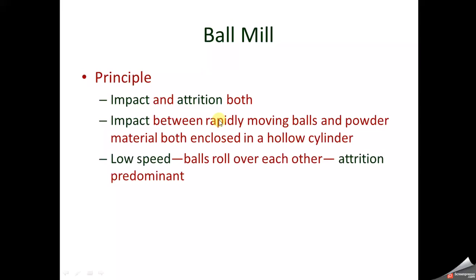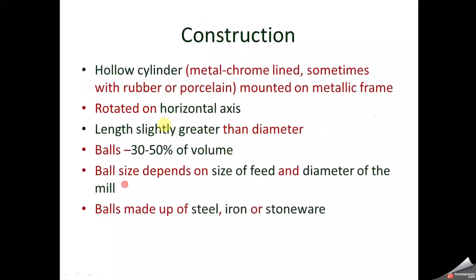Regarding construction, the ball mill basically consists of a hollow cylinder that may be metallic or chrome-lined so as to avoid corrosion. Sometimes it may be lined with rubber or porcelain. It is mounted on a metallic frame, and this hollow cylinder is rotated on the horizontal axis. Its length is slightly more than its diameter.